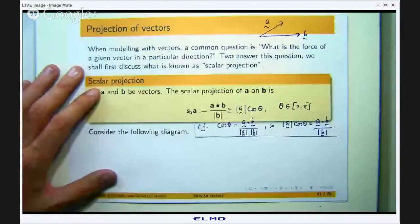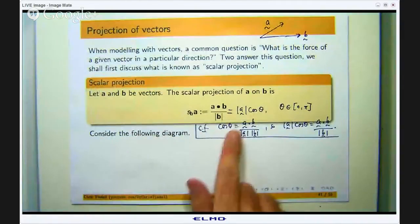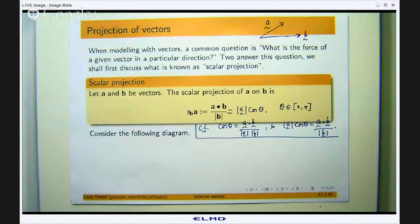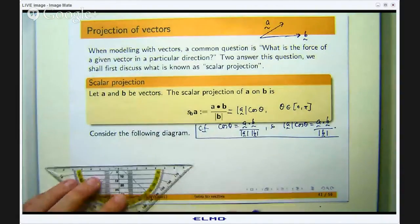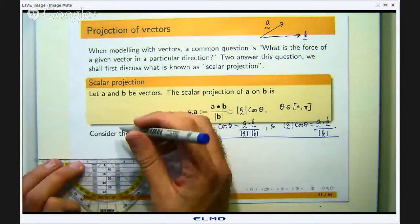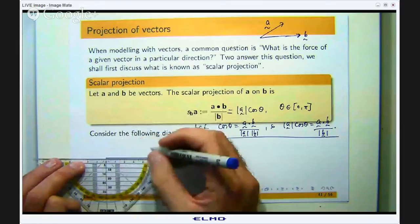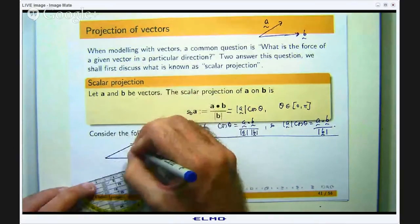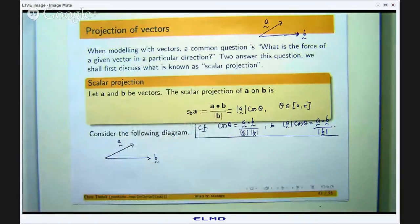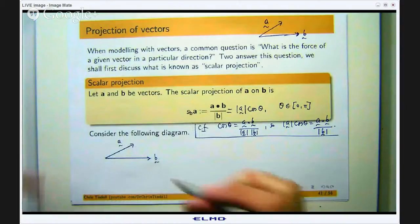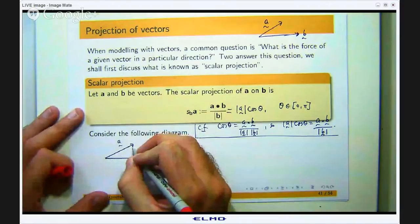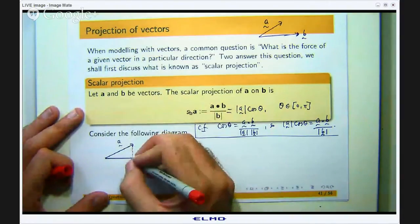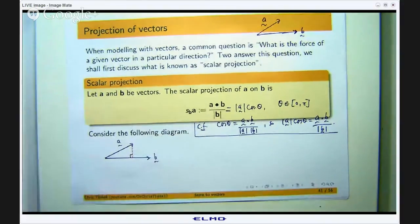So geometrically what does this signify? Let us consider the following diagram. Suppose that I have a vector here and a vector here. Now I can draw in a little right angle triangle just going to the head point of A and then drawing a little line segment to B or to the line that contains B and I have a little right angle triangle there.